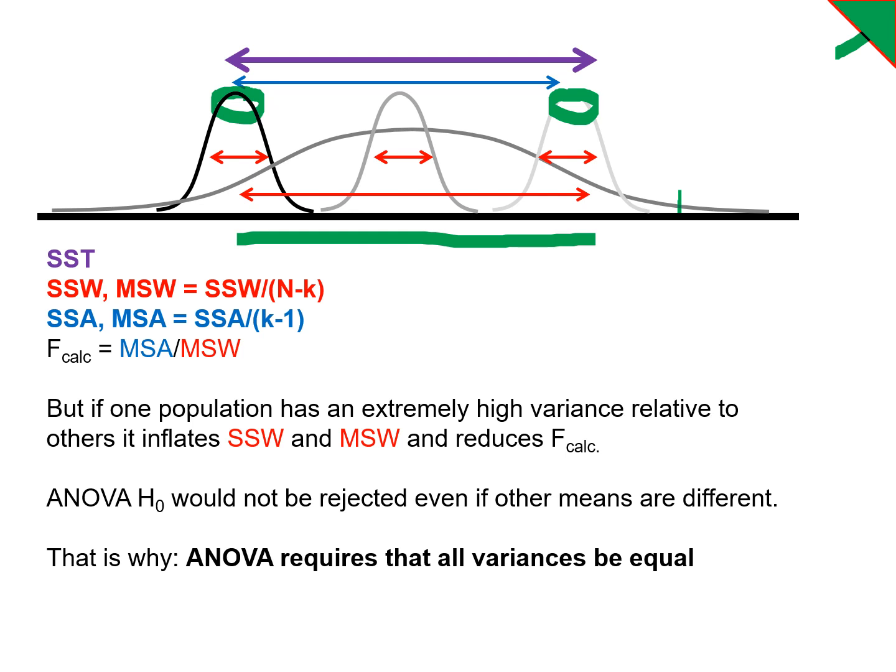and cause us to miss genuine differences between groups. If we have one variance that's much higher, it'll actually cause us to make a type 2 error and miss genuine differences. So this is the reason why the ANOVA is a homoscedastic test.